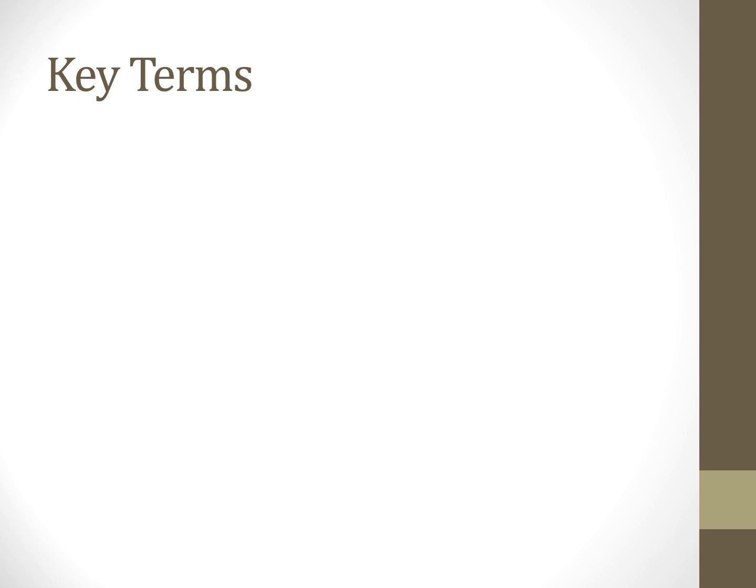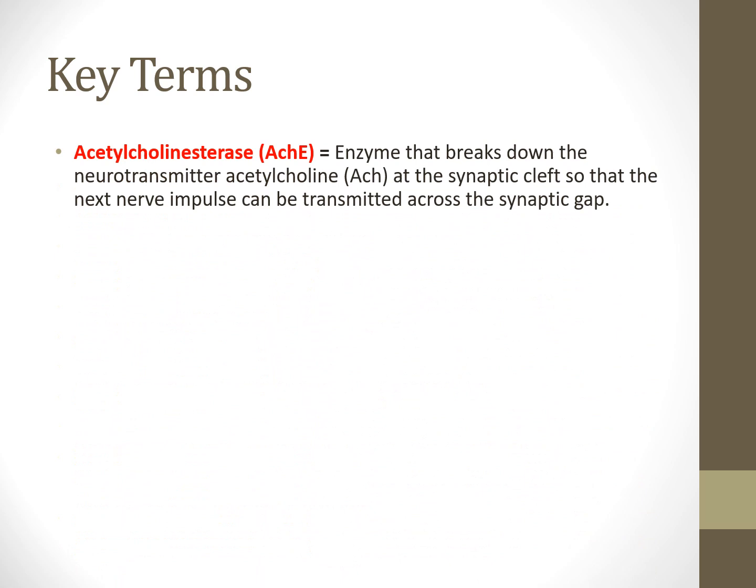We'll start out with key terms. Acetylcholinesterase is an enzyme that breaks down the neurotransmitter ACH at the synaptic cleft so that the next nerve impulse can be transmitted across the synaptic gap. We can affect the ability for this to uptake and we'll have a longer lasting paralytic effect.